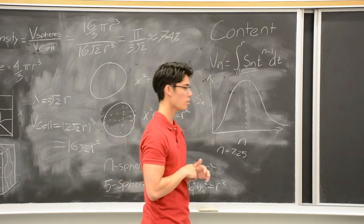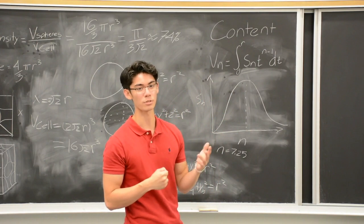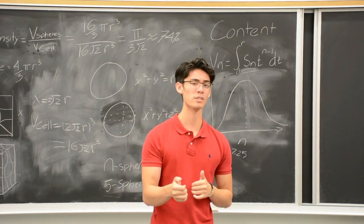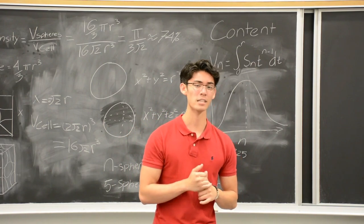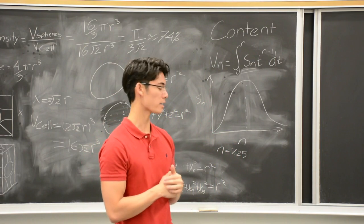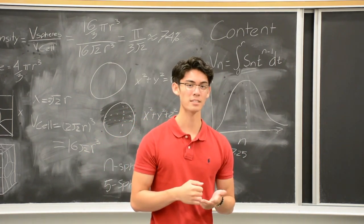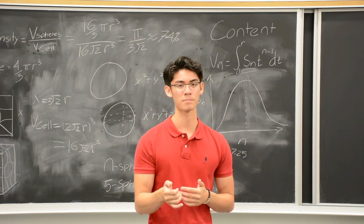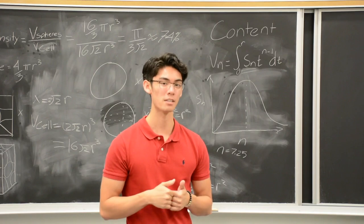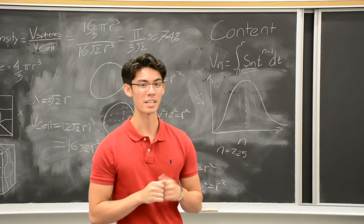Now, it is unknown what the best packing arrangements are in these upper dimensions. However, in recent studies, it has been proven that in the eighth and twenty-fourth dimension, the best arrangements for sphere packing are these geometric shapes called E8 and Leech lattice. For more information about hyperspheres and sphere packing, you can check out my extended abstract in the description. And thanks for watching.